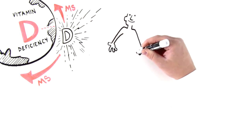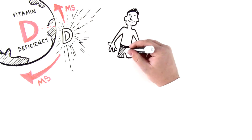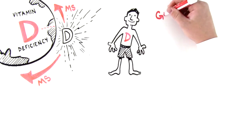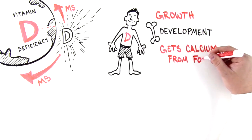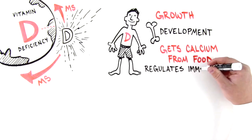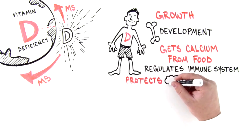Vitamin D is formed in the body from the action of sunlight on the skin. Vitamin D is involved in growth, bone development, and absorption of calcium from food. Vitamin D also helps to regulate the immune system and has protective effects on brain function.